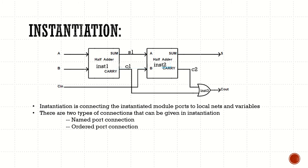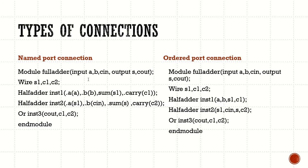We use the half adder code as instances and create a full adder. We also use an OR gate, as you know from how a full adder is built from two half adders. After instantiating we connect them. The connection can be given in two types: one is named port connection and the second is ordered port connection. In the syntax, the module name is given along with a unique instance name, and the ports A, B, C_in or the inputs, and S and C_out are the outputs.